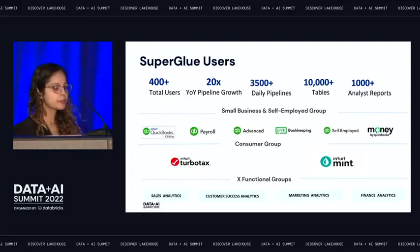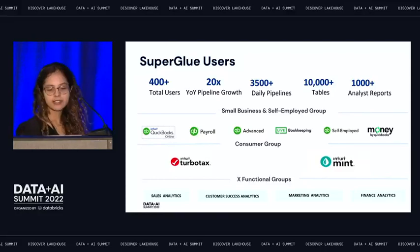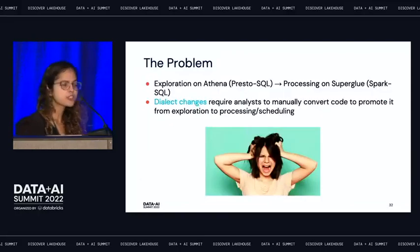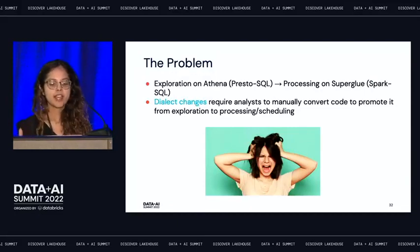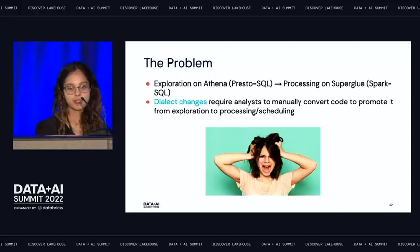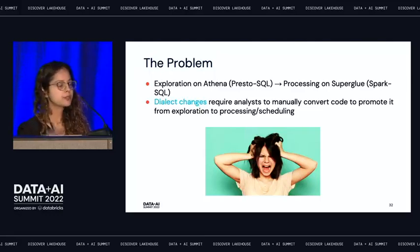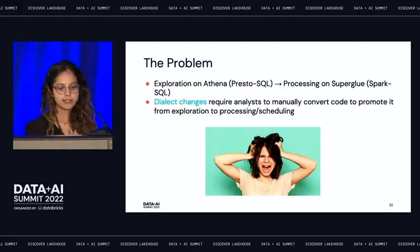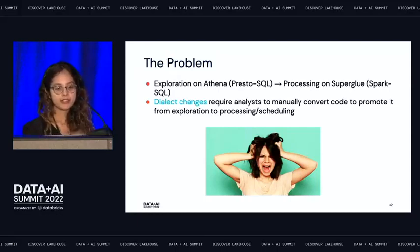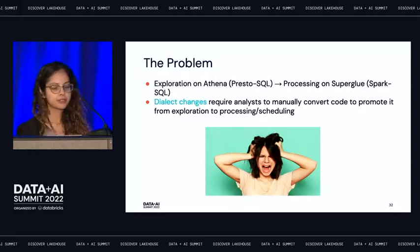We serve practically 90% or more of the analyst community at Intuit through Superglue. The problem given to us: many analysts do exploration on Athena, which uses Presto SQL, and then come to Superglue to schedule their queries. Superglue was primarily using Spark SQL as the dialect. As you know, dialect changes are not fun — it requires multiple cycles, and analysts have to manually convert their code from Presto to Spark.